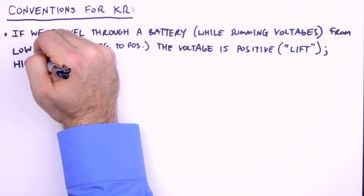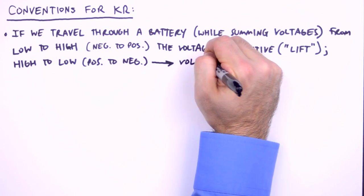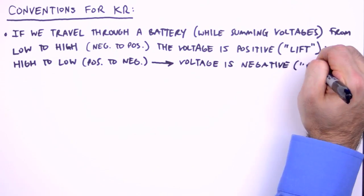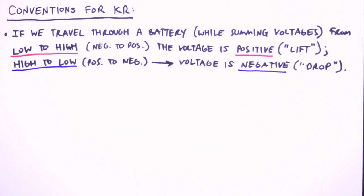If instead we travel through a battery high to low, that is positive to negative, the voltage is treated as negative, which we'll call a voltage drop because of the decrease in electrical potential. So for voltage sources, low to high, we have a positive voltage. High to low, we have a negative voltage.